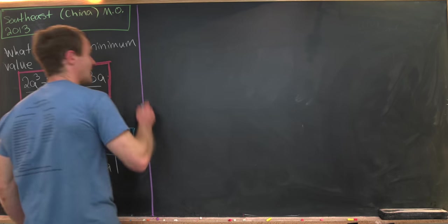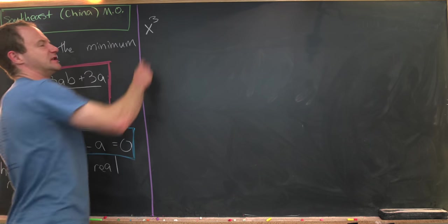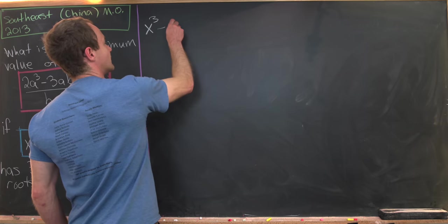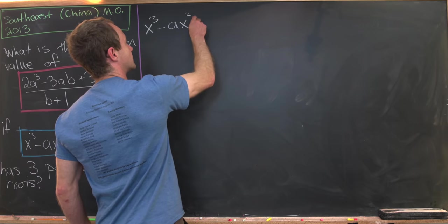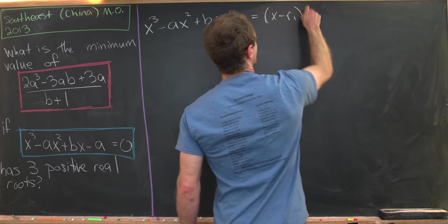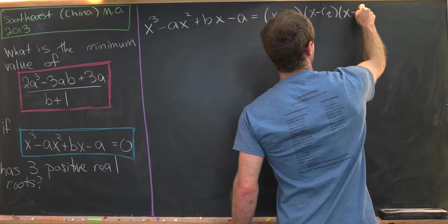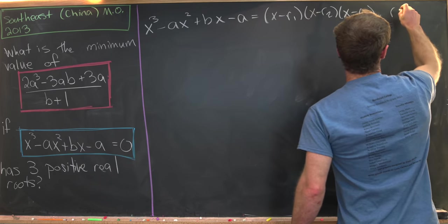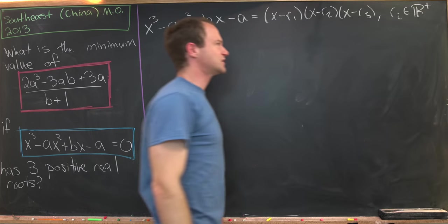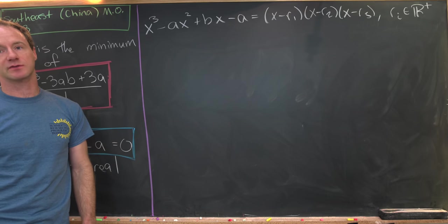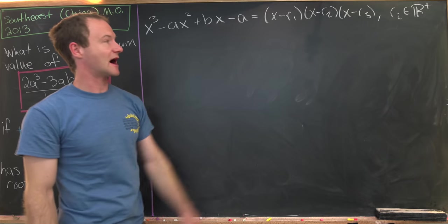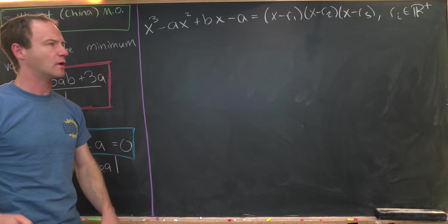Let's start by factoring this polynomial. We don't know exactly how it factors, but we can name the roots. We have x³ minus ax² plus bx minus a equals (x minus r₁)(x minus r₂)(x minus r₃), where r₁, r₂, and r₃ are positive real numbers. Now let's multiply out the right-hand side and equate coefficients.